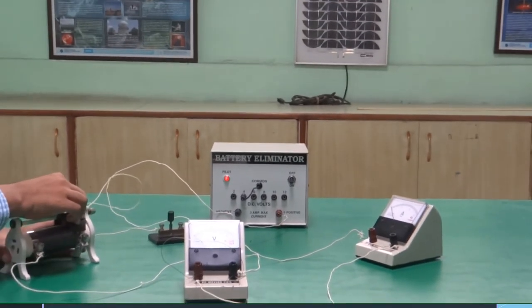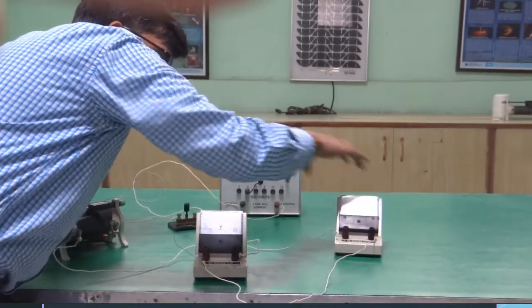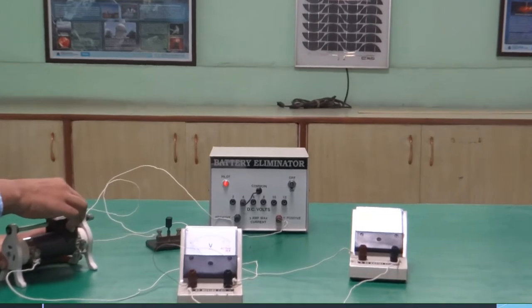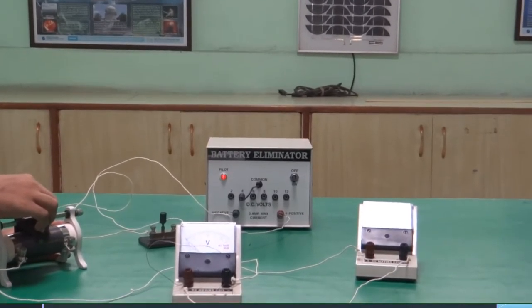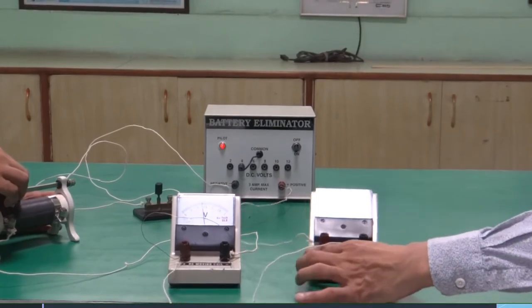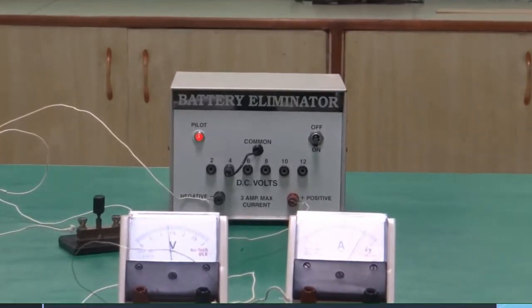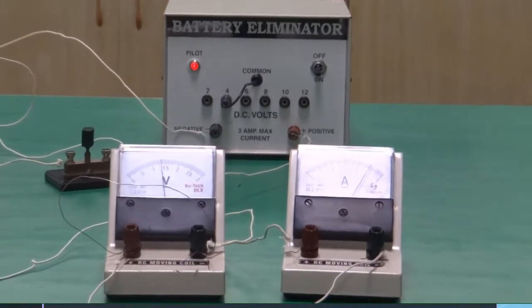Now the connection is complete. Now try to move the rheostat. I hope both are visible. So we have seen that on the full deflection the readings are varying smoothly.